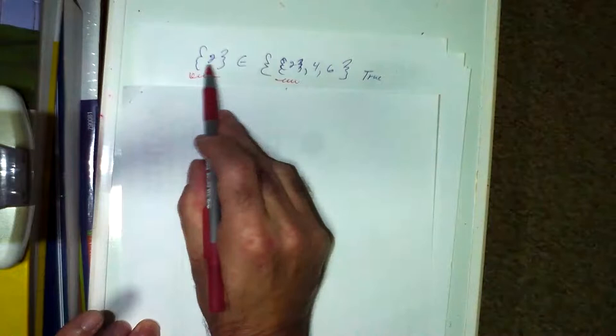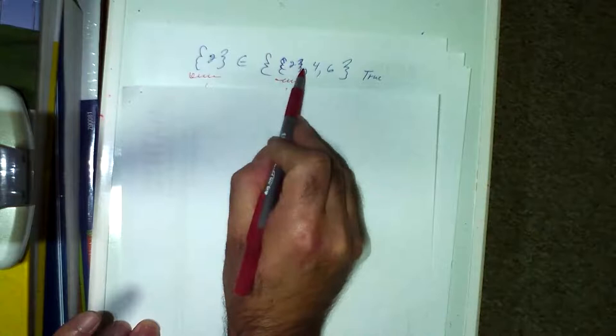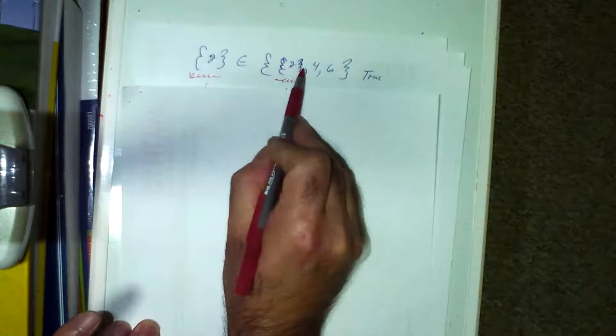To make it true, you'd need the left side enclosed in braces to be an element of a set that contains that set in braces on the inside. Then you'd have braces within braces and that would be a true statement. The left side of the element symbol has to match the inside of the set on the right.